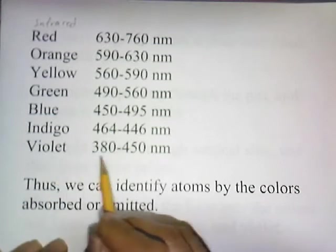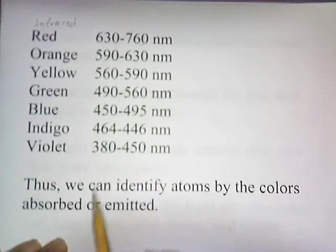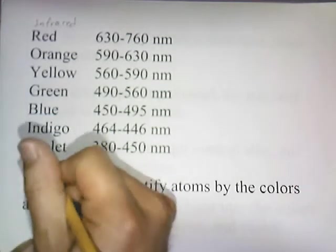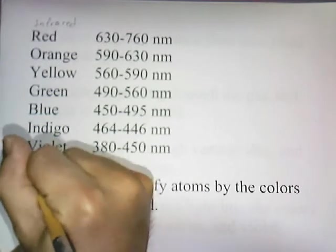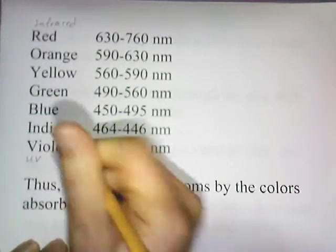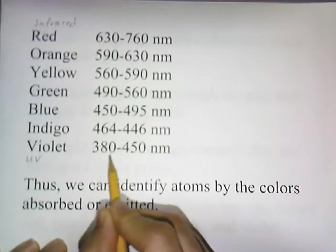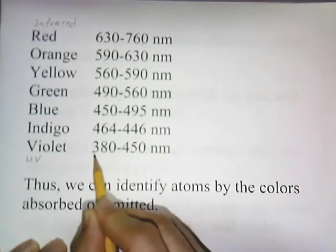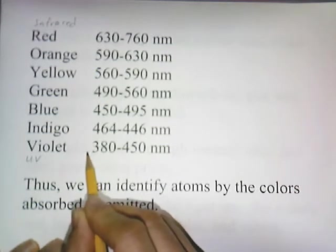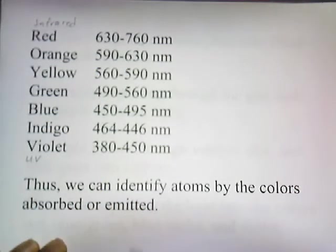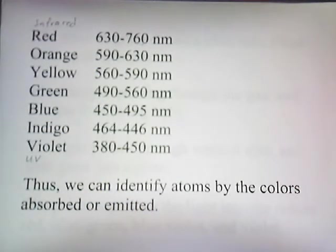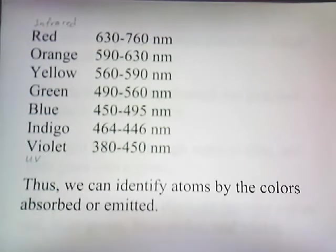On the bottom of the visible spectrum, we have violet. But beyond violet is something called ultraviolet. So if the wavelengths get smaller than 380, that's UV light — and we can't see UV light. But we can produce it and do interesting things with it. So we can identify atoms by the colors absorbed or emitted.